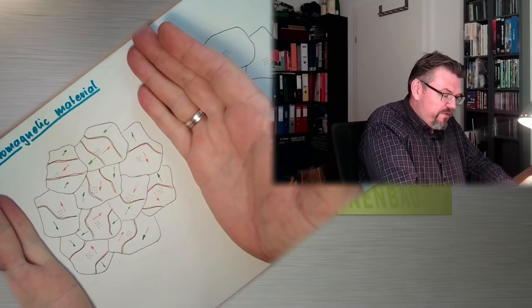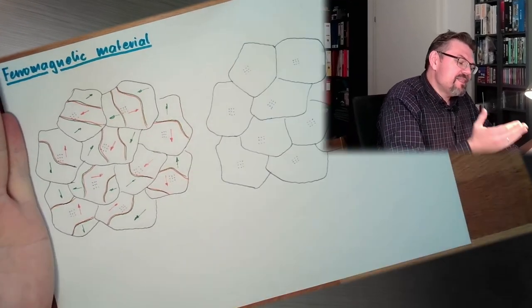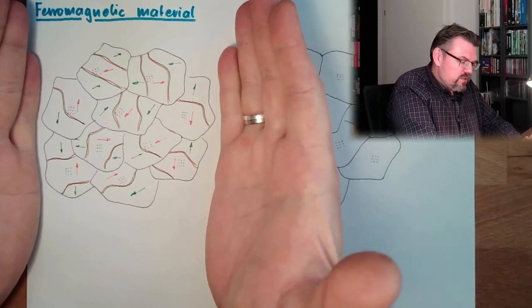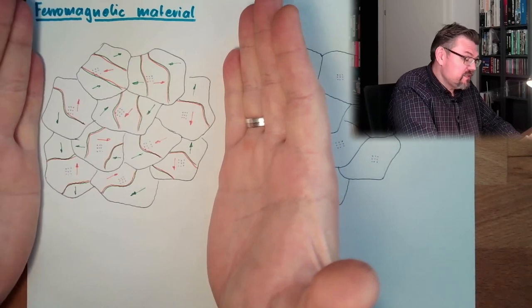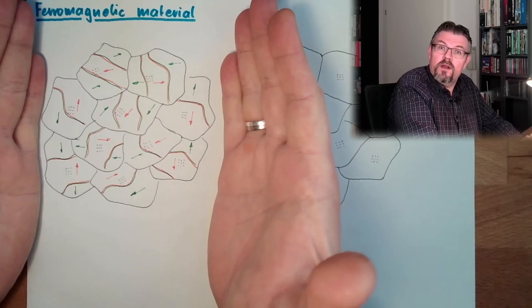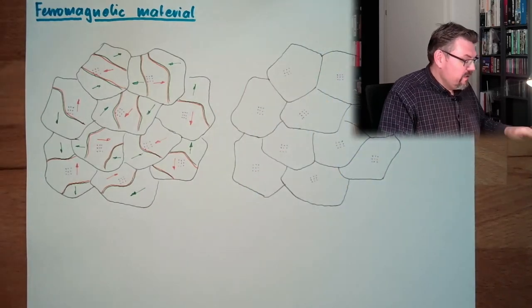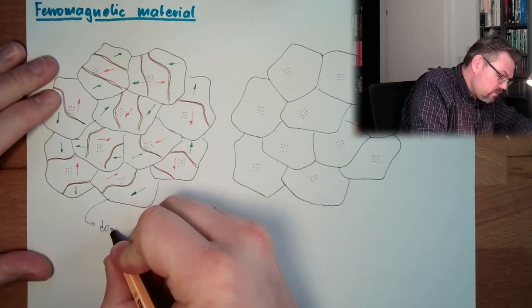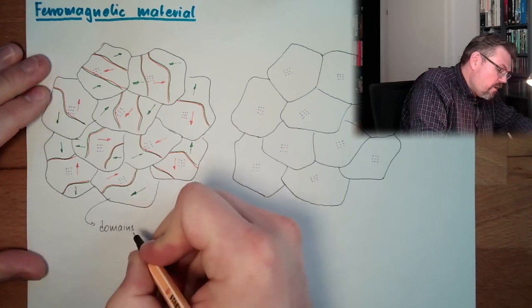Let's zoom into a ferromagnetic material. This is the original status of our ferromagnetic material. Inside we have so-called domains — in German they are called Weissbezirke, because Weiss was actually the discoverer of this. He was a French physician. These are our so-called magnetic domains.